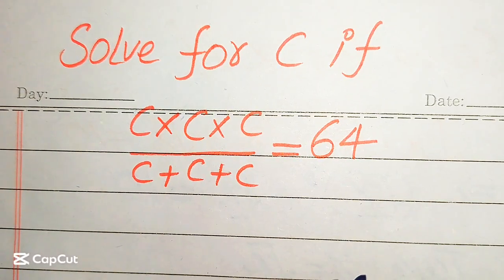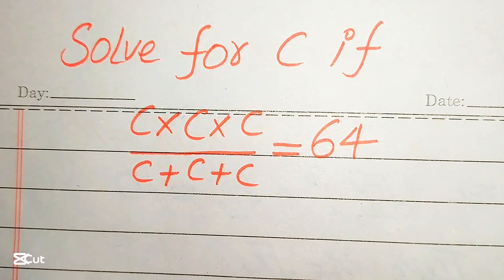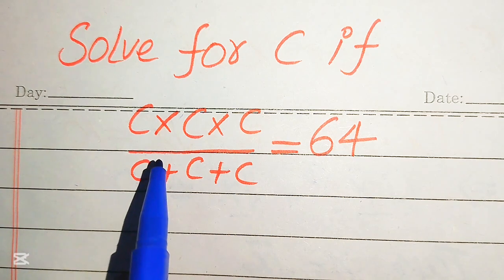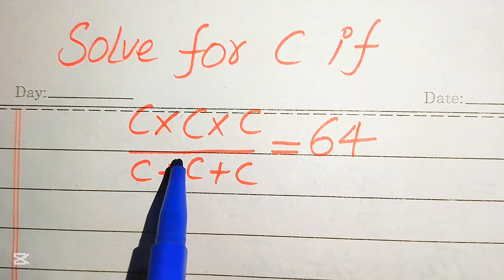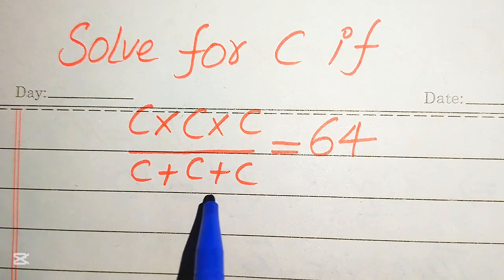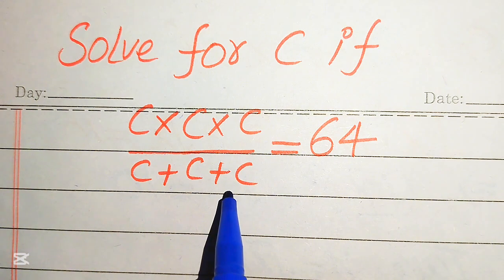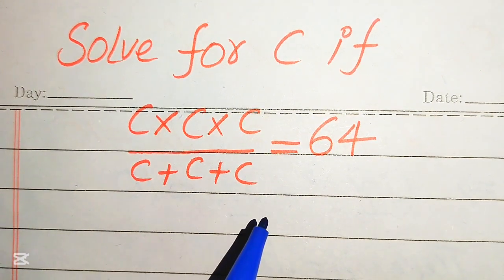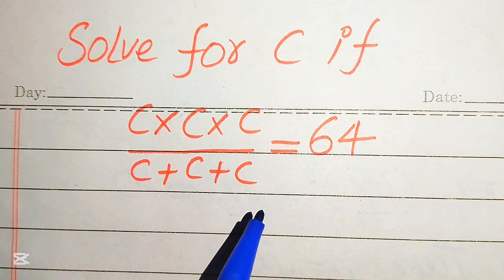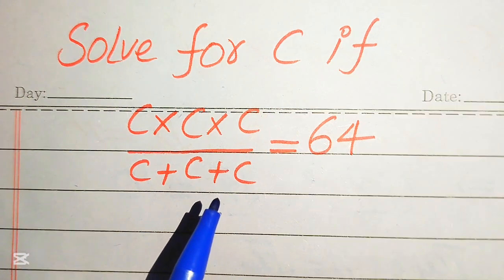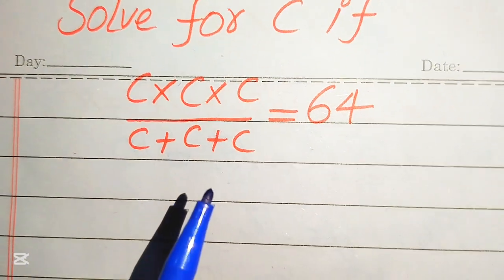Hello everyone. Today I want to show you how to solve this problem for the values of c, if we have c multiplied by c multiplied by c, divided by c plus c plus c, and it equals 64. We solve this problem for the values of c, and I hope you like this method. If you have any other method in mind, please don't hesitate to write it in the comment section.